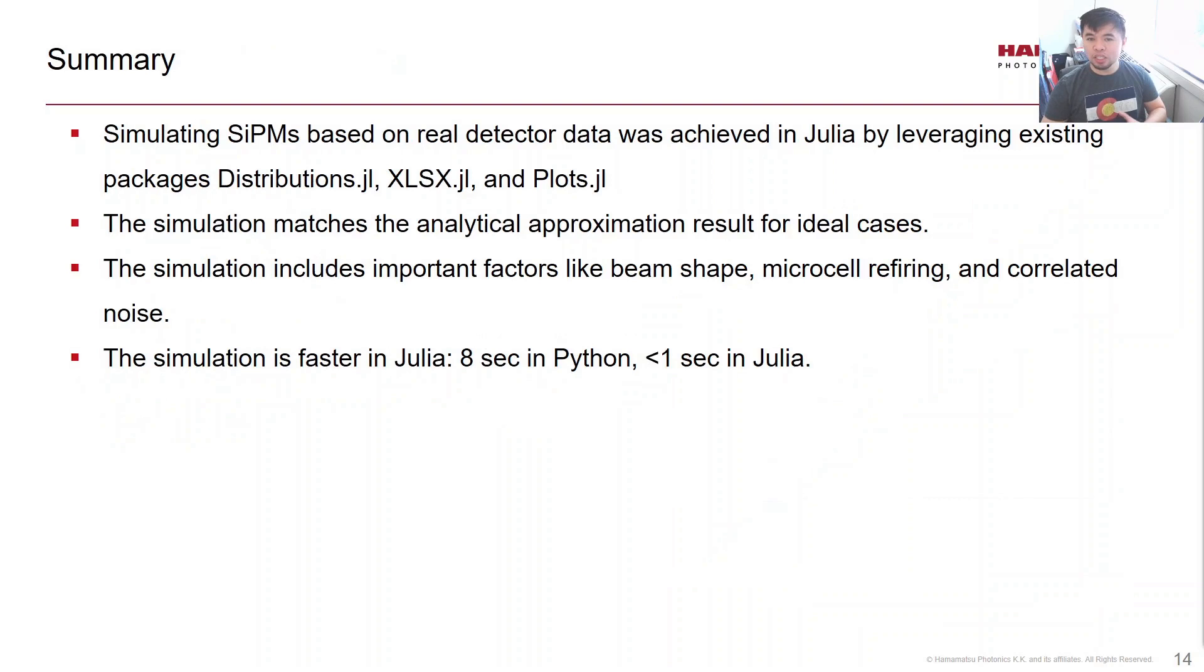So we demonstrated silicon photomultiplier simulation in Julia by leveraging existing packages. And we're using this at Hamamatsu to more accurately predict nonlinearity. The simulation is also much faster than our previous implementation in Python.